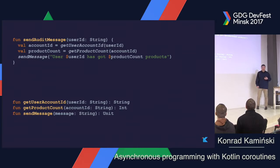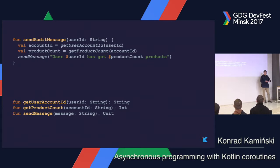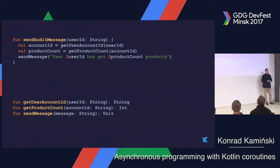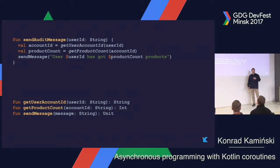Let's have a look at this simple code. It's simple because there are only three lines which execute in sequence. We have a method that first retrieves the account ID of a user, then asks with a second method how many products that account has, and then it sends some information about this account and the user to some other service. The code is quite straightforward.